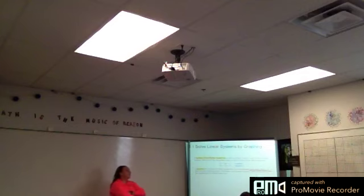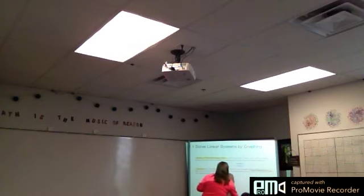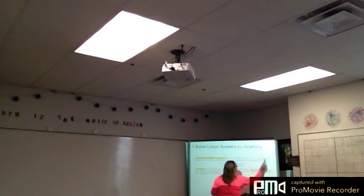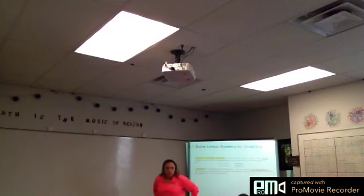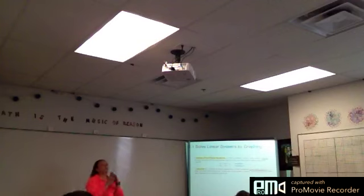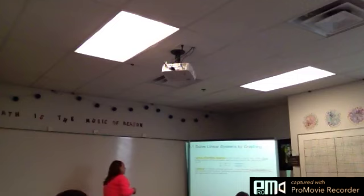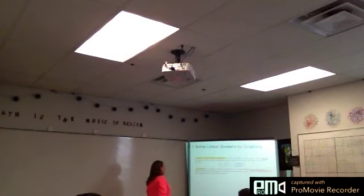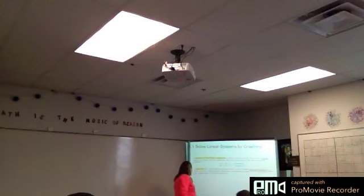A system of linear equations in two variables x and y is also called a linear system. When you have two equations, you have a linear system. This will also be on PowerSchool tonight, and the definitions are also in your book.